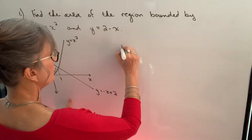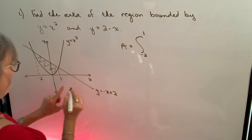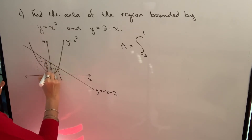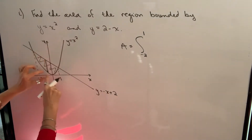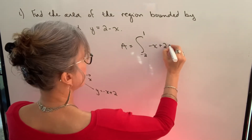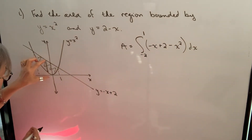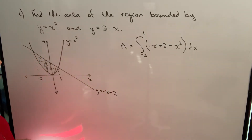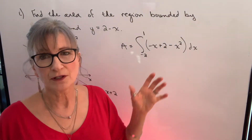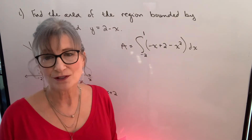The area of this region will be the integral from negative 2 to 1. Thinking about our representative rectangle, the length is defined by this y value minus this y value: negative x plus 2 minus x squared dx. The width is dx. We check for like terms to simplify, but we don't have any, so we go ahead and integrate.